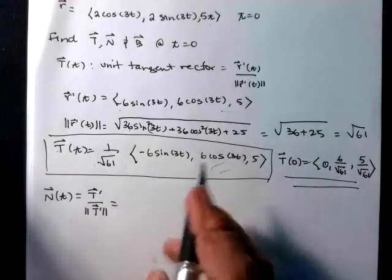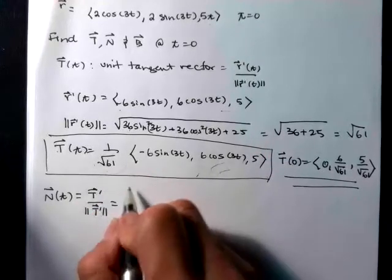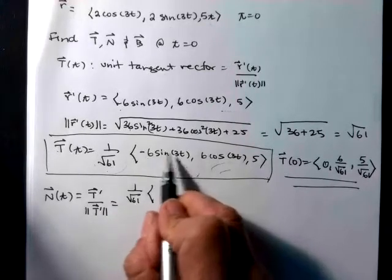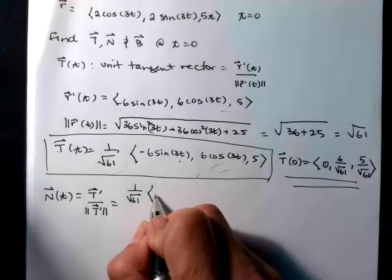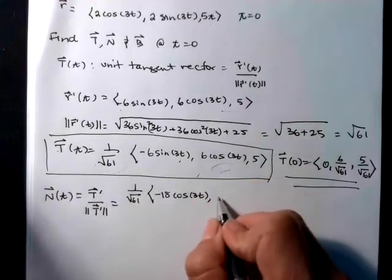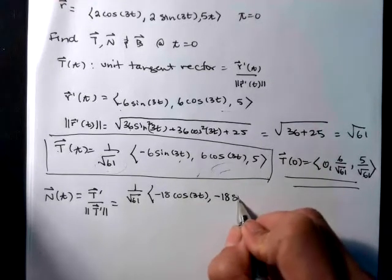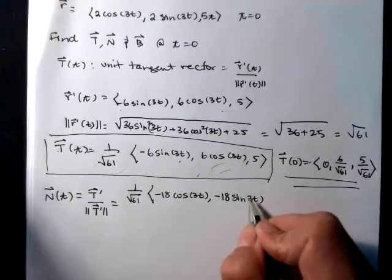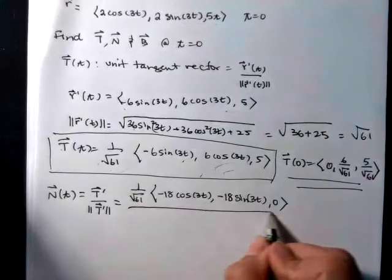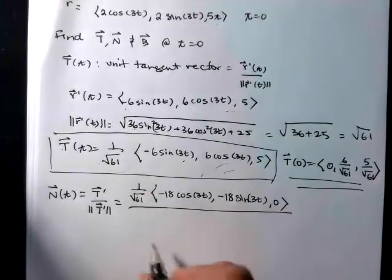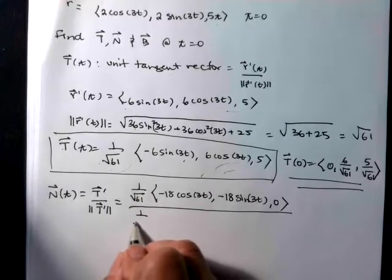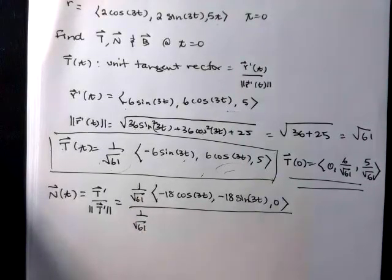Okay, so we're just going to do the derivative of T here. So the coefficient will just still be out in front. So 1 over square root of 61. Okay, so here we go. Another chain rule, so that'll be negative 18 cosine 3t, and then negative 18 sine 3t, and then the derivative of 5 is 0. And now we need the length. Okay, so write this 1 over square root of 61. That's just part of the length. So I'm going to keep that out in front.